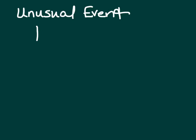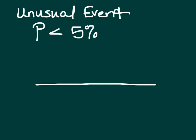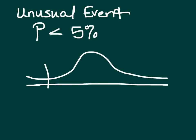What is an unusual event? An unusual event is an event that has a probability less than 5%. An unusual event can also be seen if we look at the normal distribution and see that it is an event that would fall in the tails of our curve.